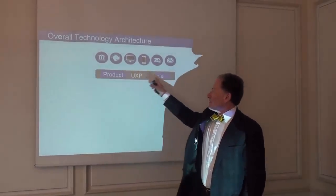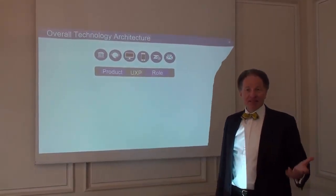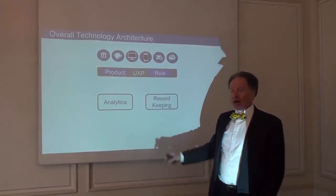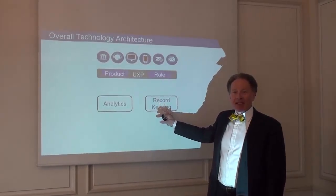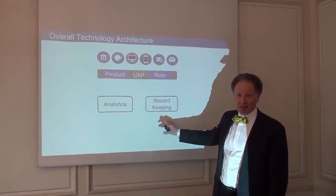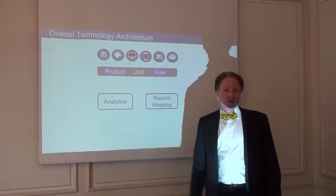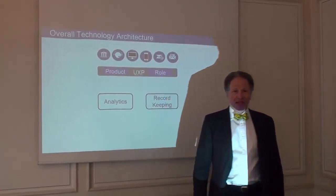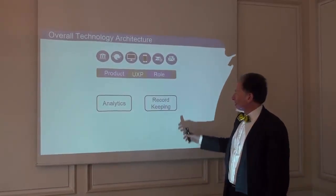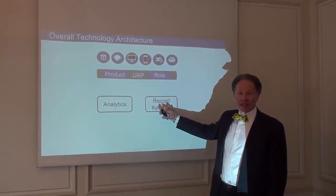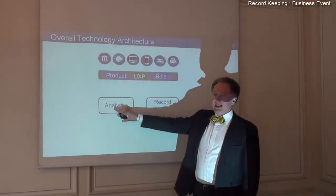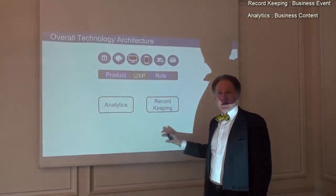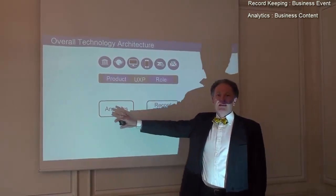Behind these user interfaces are the business information systems. The business information system consists of record-keeping and analytics. I'm not referring to any particular application here — this isn't particularly AAA+ or particularly T24. It could be either, or it could be something else. But any application will have both a record-keeping aspect and an analytics aspect. The role of the record-keeping is to keep track of business events, and the role of the analytics is to present business content. So the information system as a whole is about turning business events into business content.